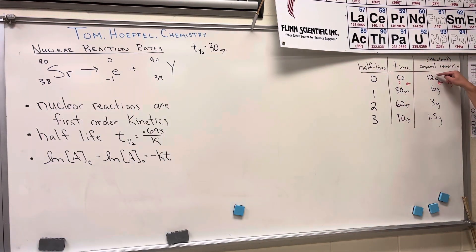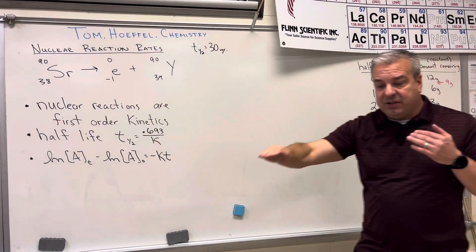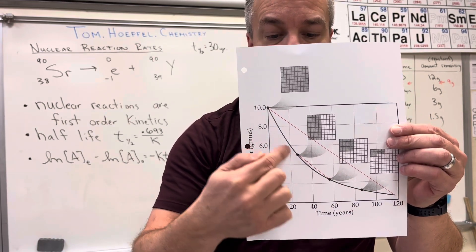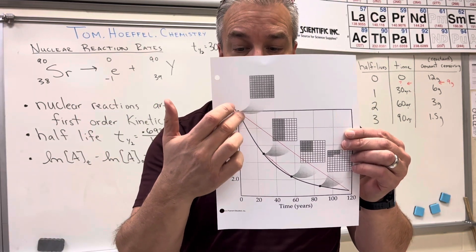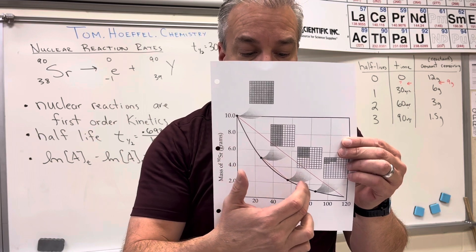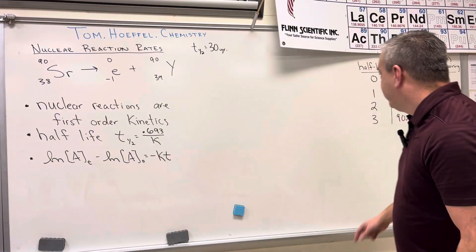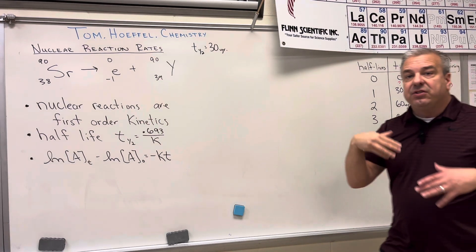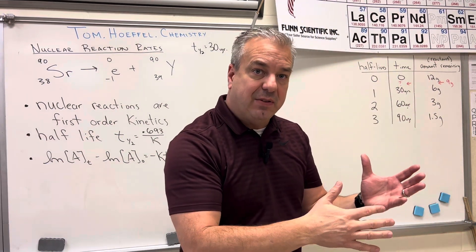The reason 15 years is wrong is that this reaction is not linear — it's not a straight line. In 30 years six grams reacts, but in the next 30 years only three grams reacts. It's a curve: the reaction starts out very fast and then slows down. The amount reacting every 30 years keeps decreasing — 6g, then 3g, then 1.5g.